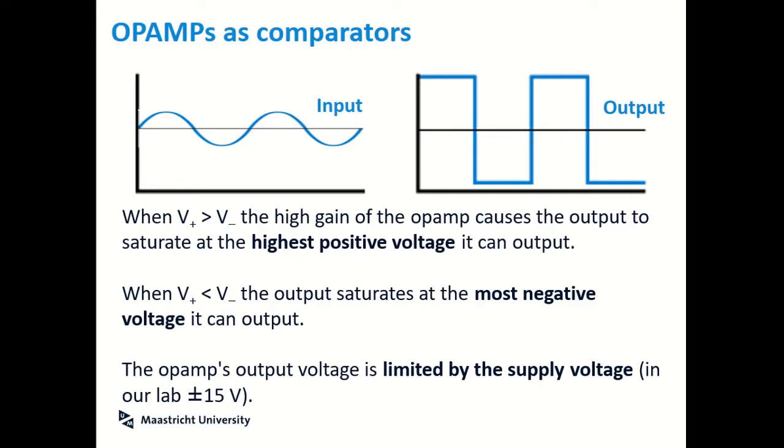Because you're comparing two inputs and you're essentially only getting two possible states out, either plus 15 or minus 15, you get a binary output in this case. So essentially what you're doing is you're getting an analog signal and you're getting a digital signal out. So this is just one method of converting analog to digital.